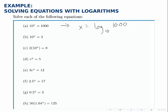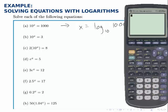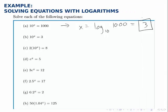Thus, to find x, we just need to evaluate log base 10 of a thousand. Pulling up the calculator, we evaluate log, which means log base 10 of a thousand. And the answer, of course, is three. Therefore, x equals three for the first example.